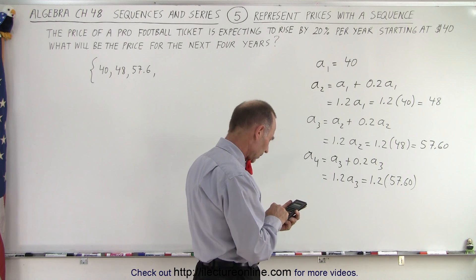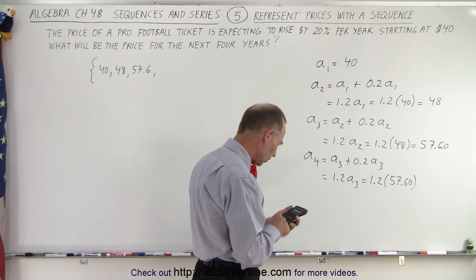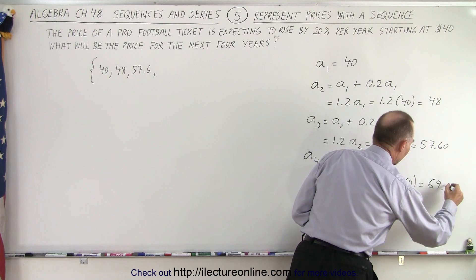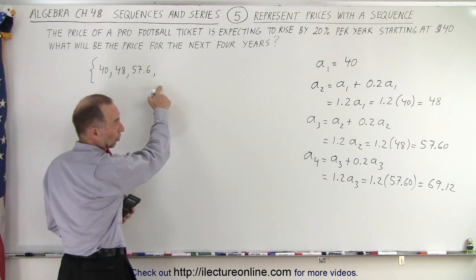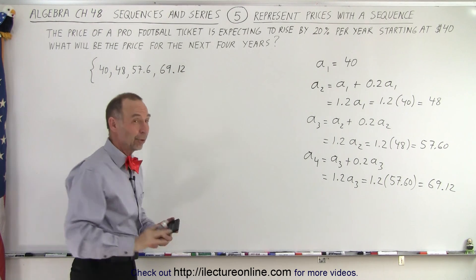All right, so now times 1.2, and we get 69.12. That's 69.12. There we go, and that's going to be the next term in our sequence, 69.12.